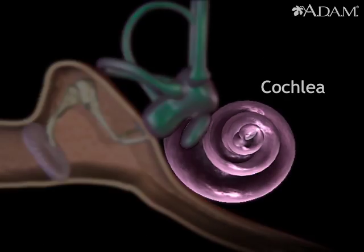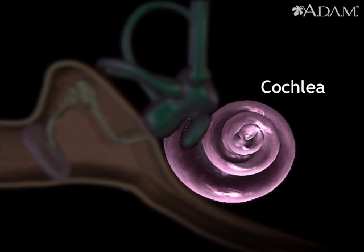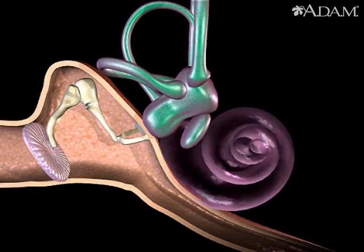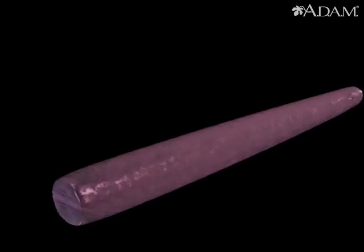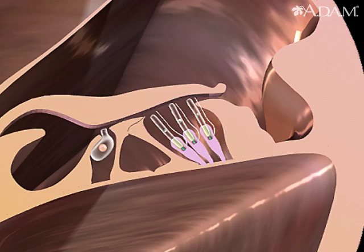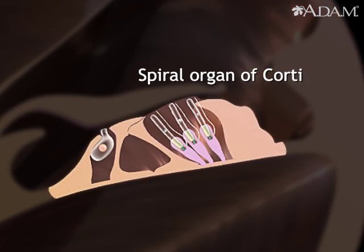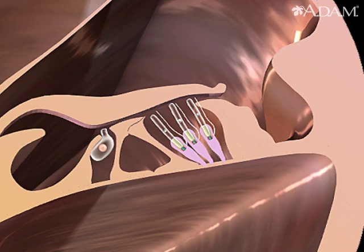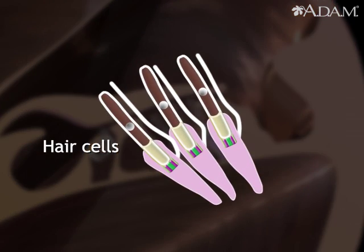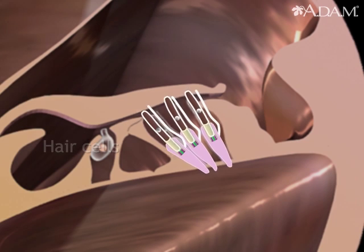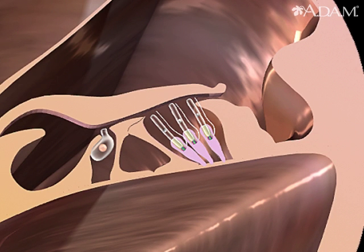This action is passed on to the cochlea, a fluid-filled, snail-like structure that contains the organ of corti, the organ for hearing. It consists of tiny hair cells that line the cochlea. These cells translate vibrations into electrical impulses that are carried to the brain by sensory nerves.